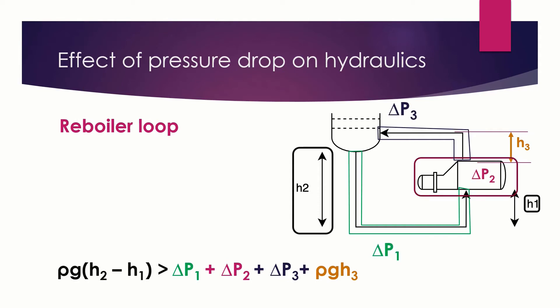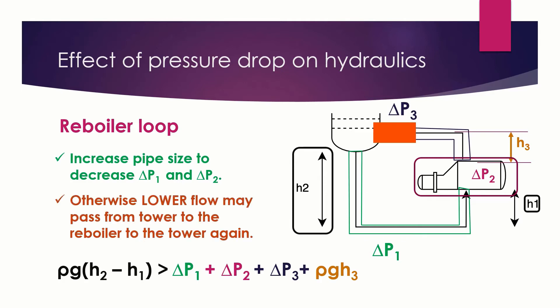If we used the typical pressure drop criteria in most cases, lower pipe sizes will meet them. But if we used these sizes in this check here, we will find that the pressure here may be larger than the pressure here, which shall cause no flow or much less flow in the reboiler loop, which means low reboiler duty and tower disturbance.